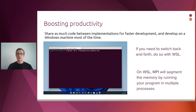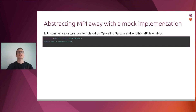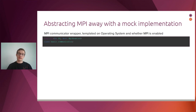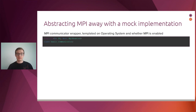Once on WSL, you can use MPI to segment your memory, running your program in multiple processes to simulate what it would look like on a supercomputer. The way to share the same code while conditionally depending on MPI is by creating a wrapper around the MPI library, then using a template to compile either the wrapper that uses MPI or one that does not — and the one that does not will mock it.